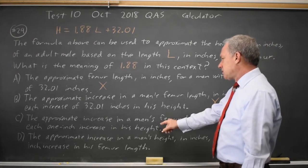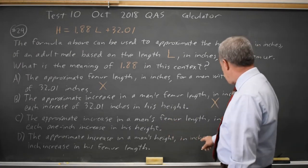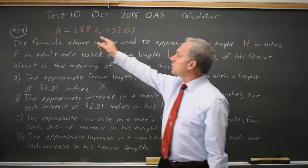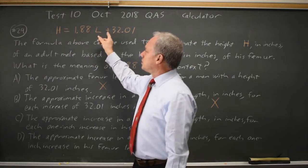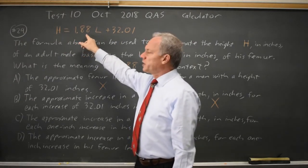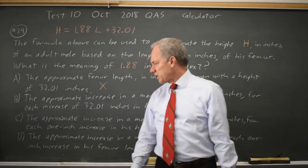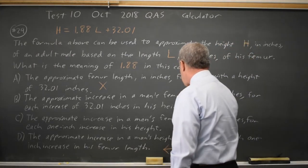C and D, C is increase in femur length for each 1-inch increase in height. D is increase in height for each 1-inch increase in femur length. Since it's 1.88 times L added to 32 gives you H, 1.88 is how much H goes up for each increase by 1-inch in femur length. So that would be choice D and not choice C.